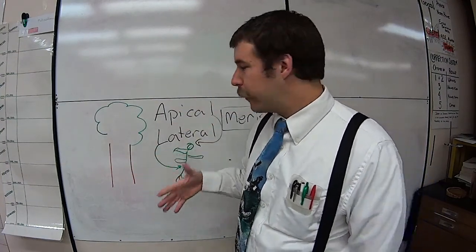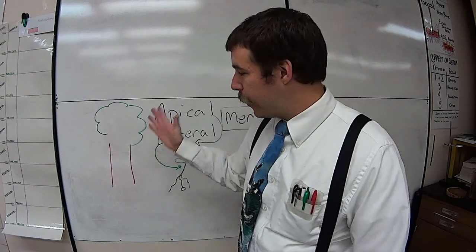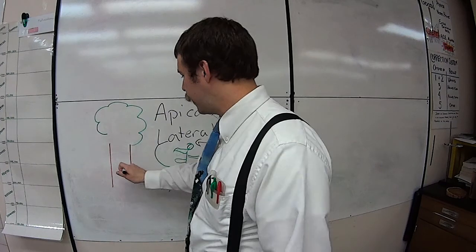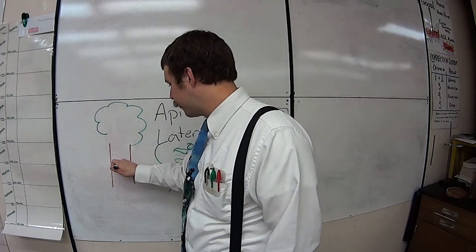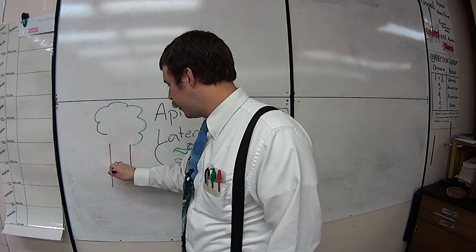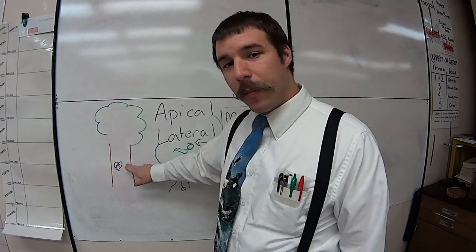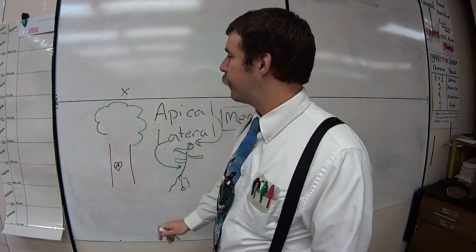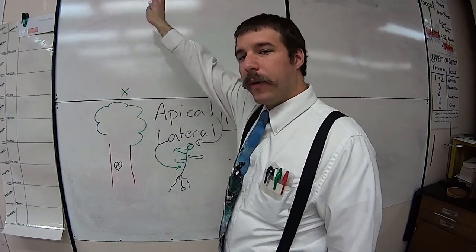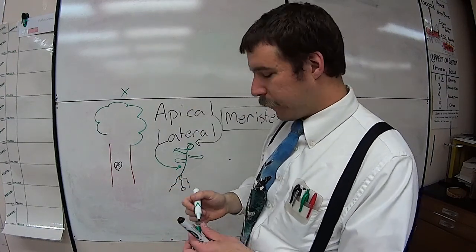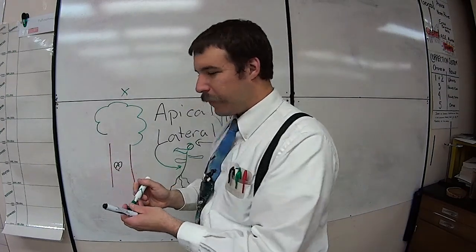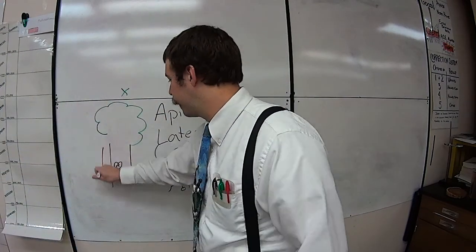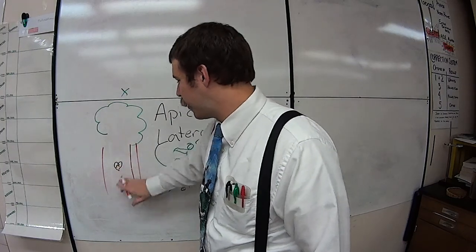Based on the way these two growths work, there are two things to understand about trees. First, if you carve your name — say 'Joni loves Chachi' — into a tree right here, that carving will always remain at that same height for the rest of the tree's life. The tree continues growing from its apical meristems, getting taller upward. However, it will also grow wider, so that carved heart will get wider and wider as the tree grows from its lateral meristem, getting fatter and fatter.